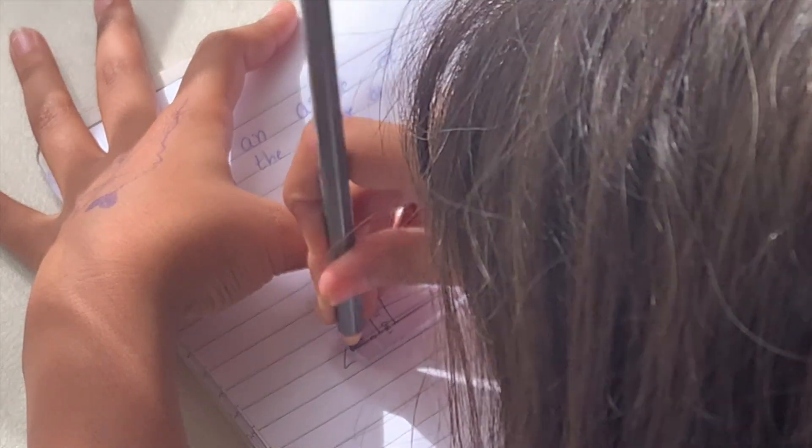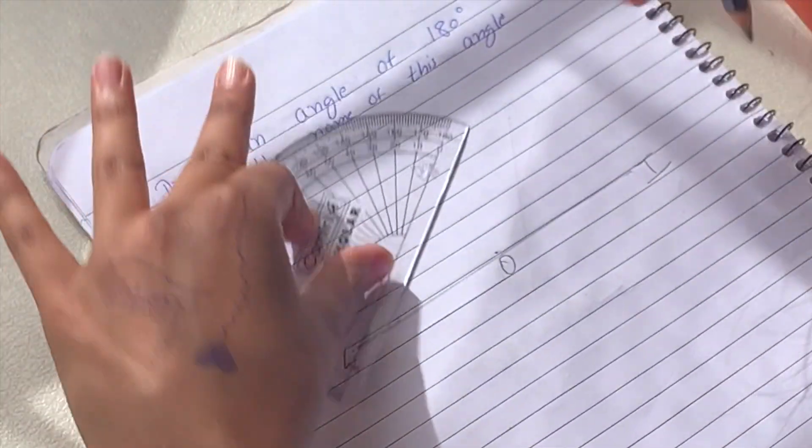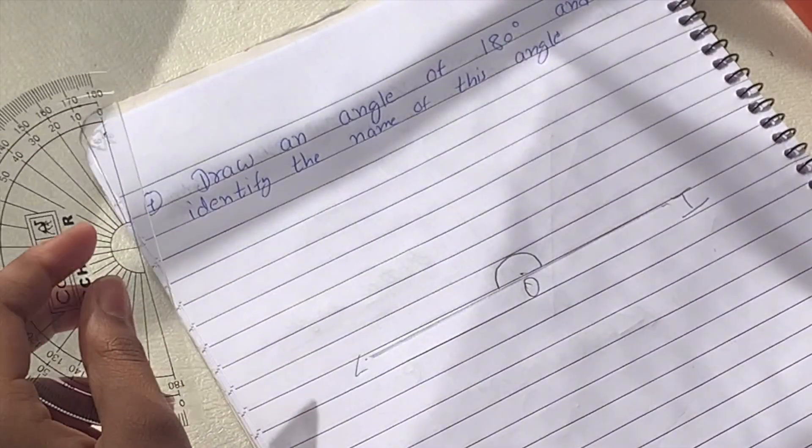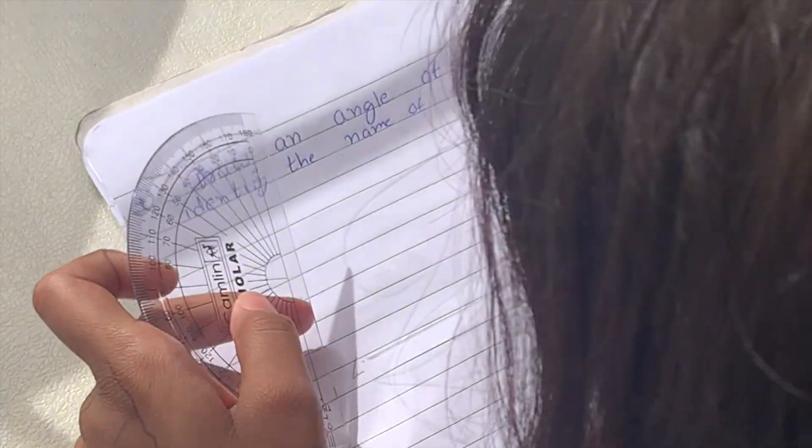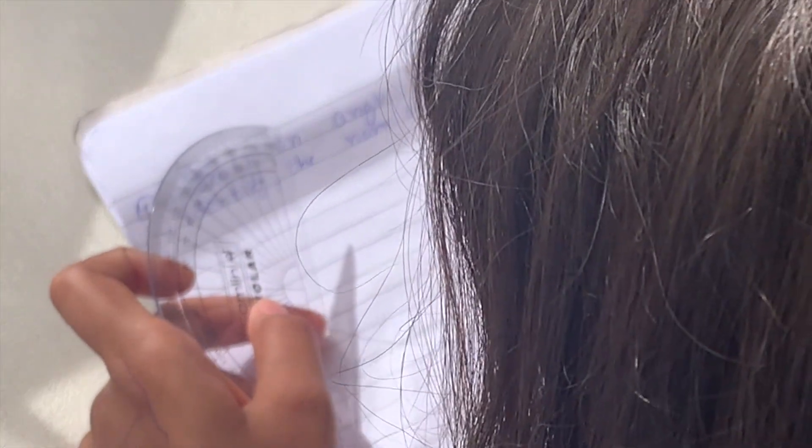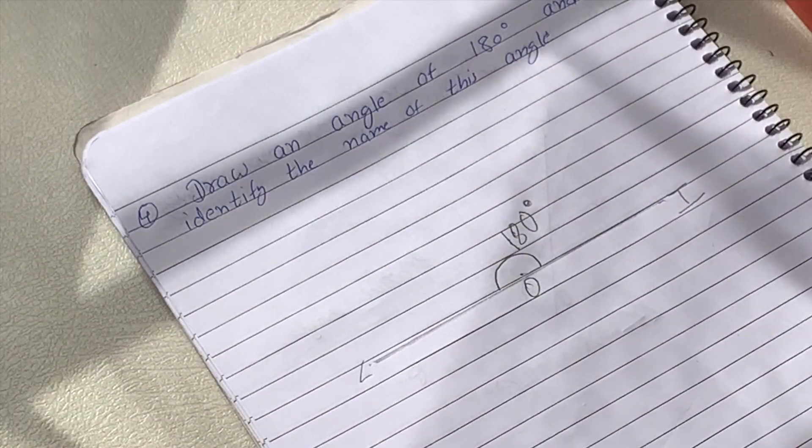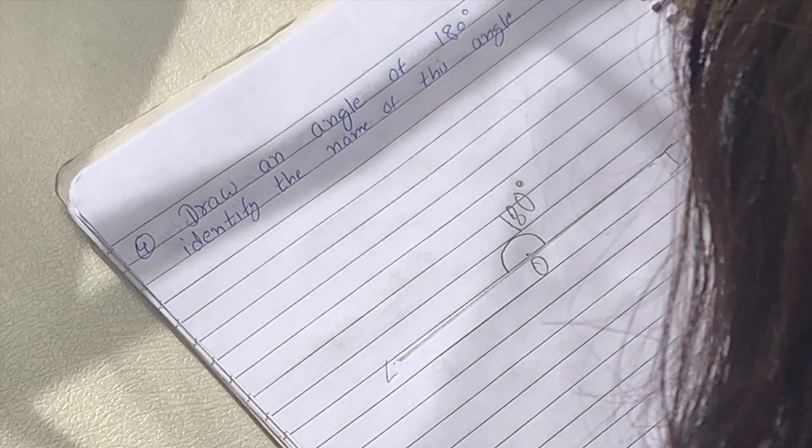So we can put a dot right here. This means that this is a 180-degree angle. This means that angle...